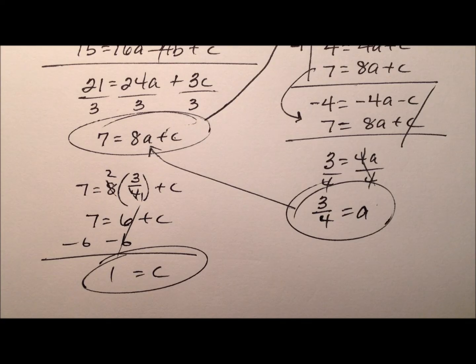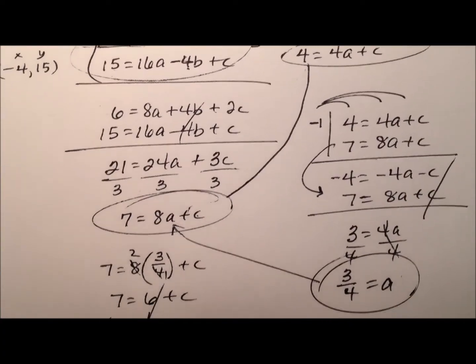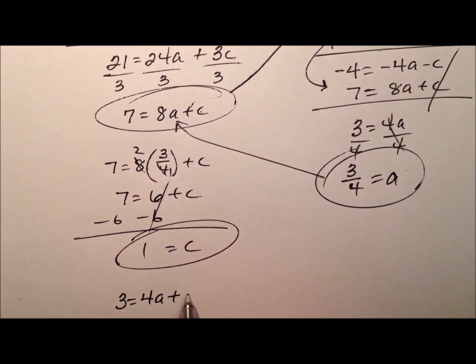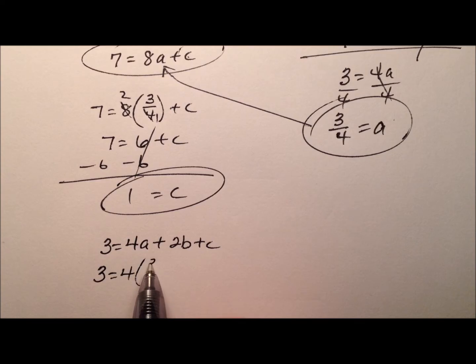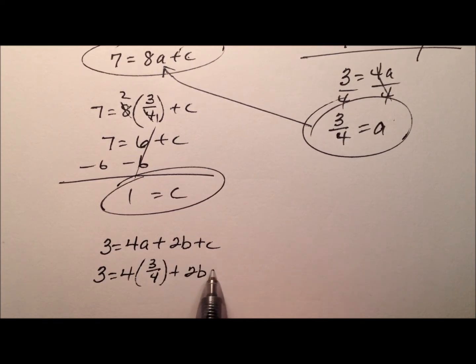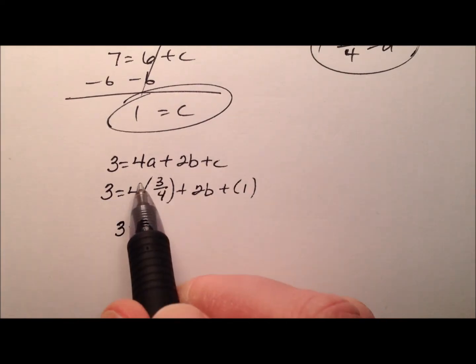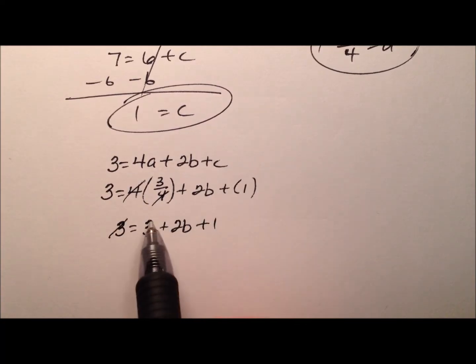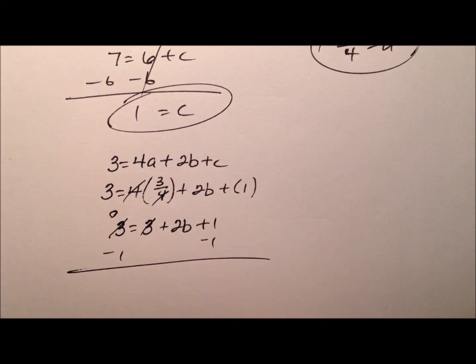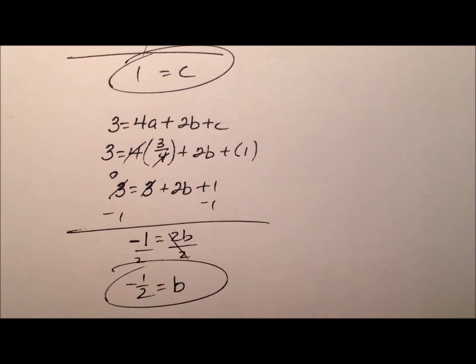Let's look at this equation right here. So it's 3 equals 4a plus 2b plus c. And we know the value of a was 3 fourths. We're looking for that value of b, but we know c is 1. So 3 equals, here these 4s cancel, so 3 plus 2b plus 1. It looks like those 3s can cancel and subtract 1 from both sides. So negative 1 equals 2b. When I divide by 2, b equals negative 1 half.